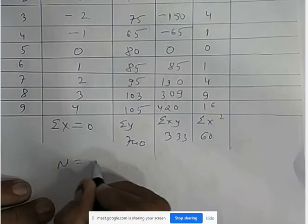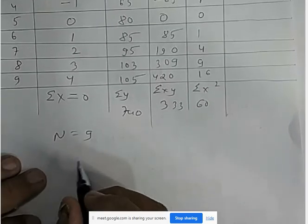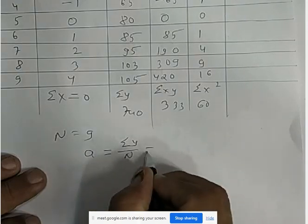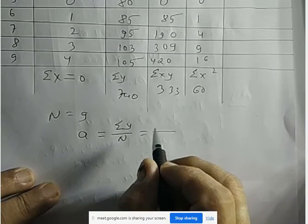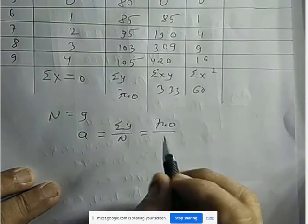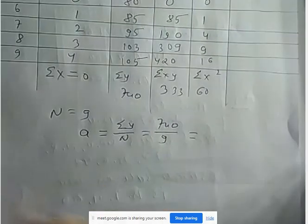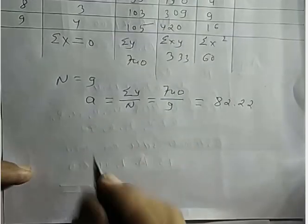N is equal to 9. A is equal to sigma Y divided by N. Sigma Y is 640, N is 9, so A equals 82.22.